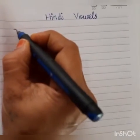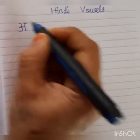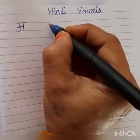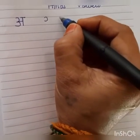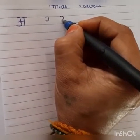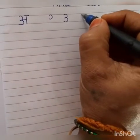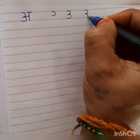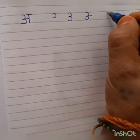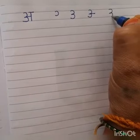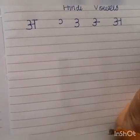The first letter is A. What is this letter? A. Let us see how to write. First one curve, again one more curve. It looks like three. Now from the center we draw a sleeping line, small sleeping line. Again we draw one standing line.